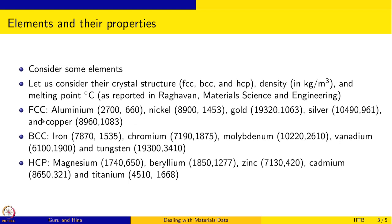For FCC, we have chosen aluminum, nickel, gold, silver and copper, and the two numbers are the densities and melting points respectively. For BCC, we are going to consider iron, chromium, molybdenum, vanadium and tungsten. And for HCP, magnesium, beryllium, zinc, cadmium and titanium. This is the data and we want to enter it, work with it, and plot it.